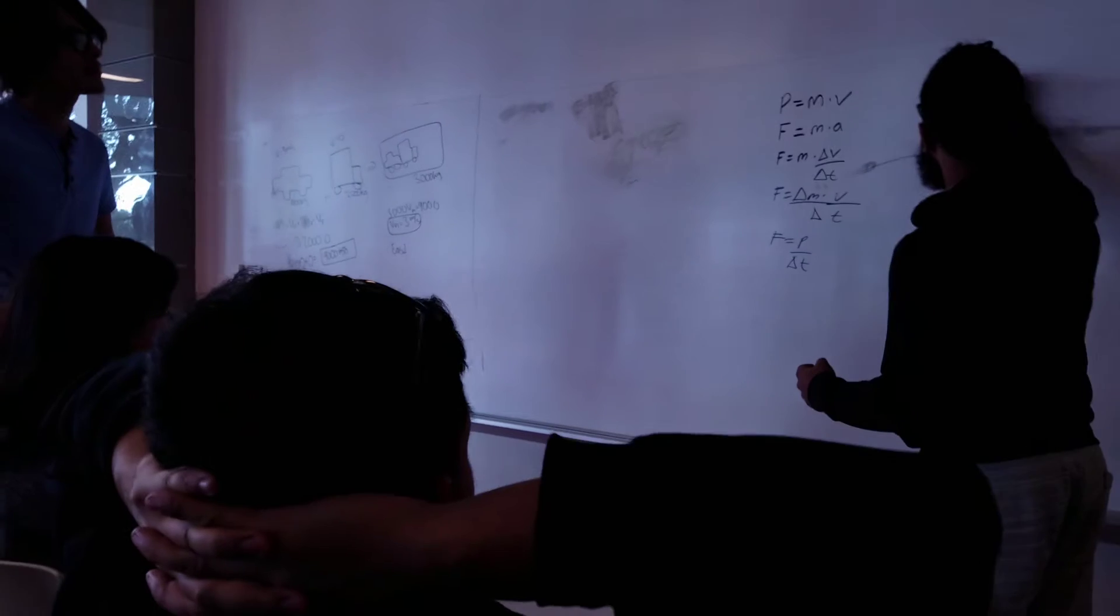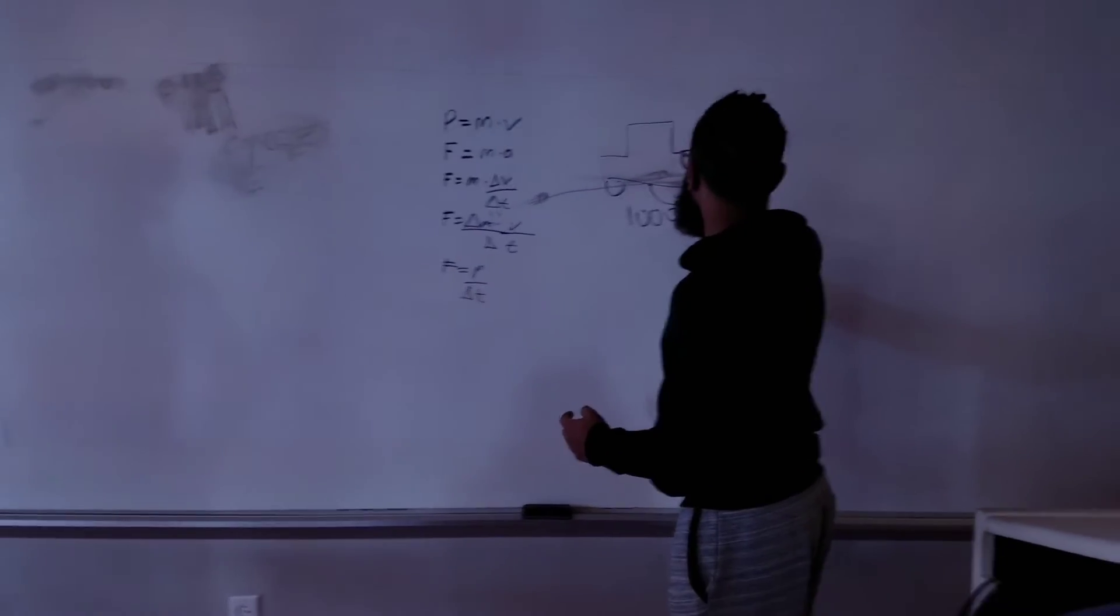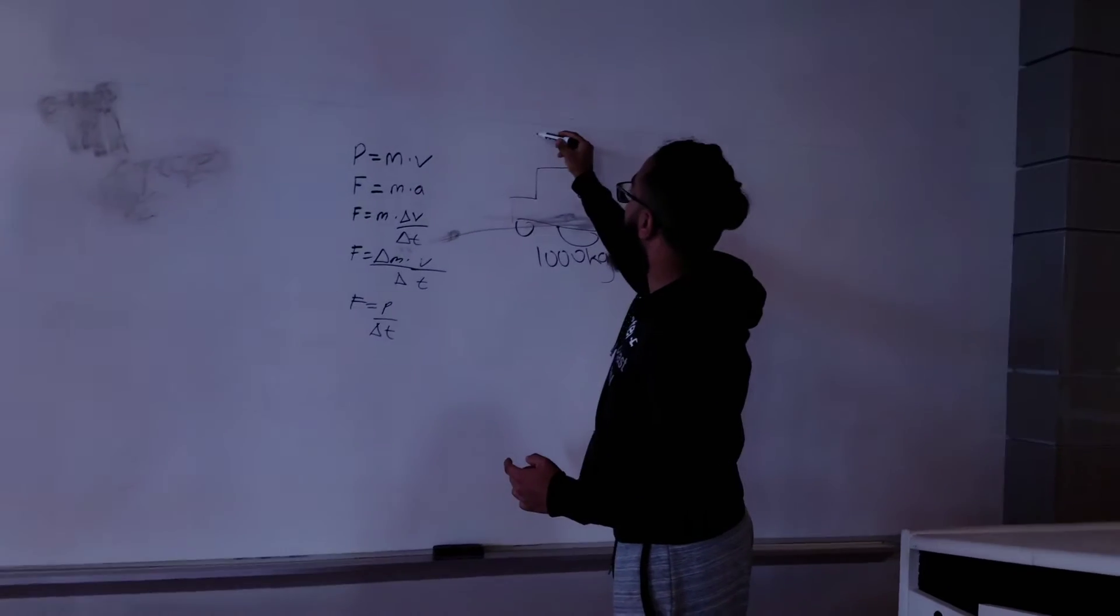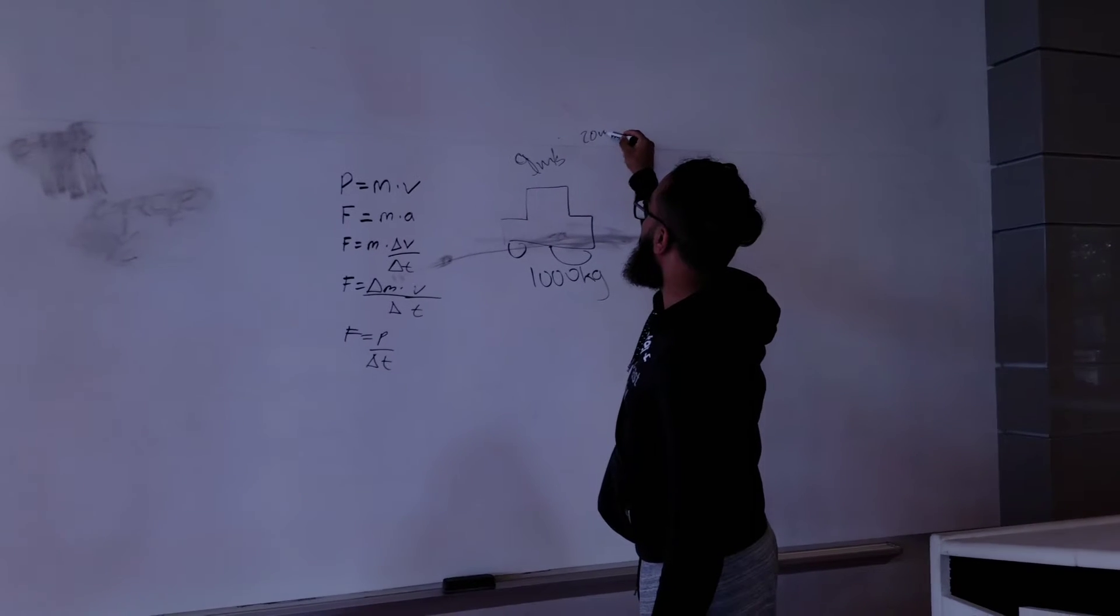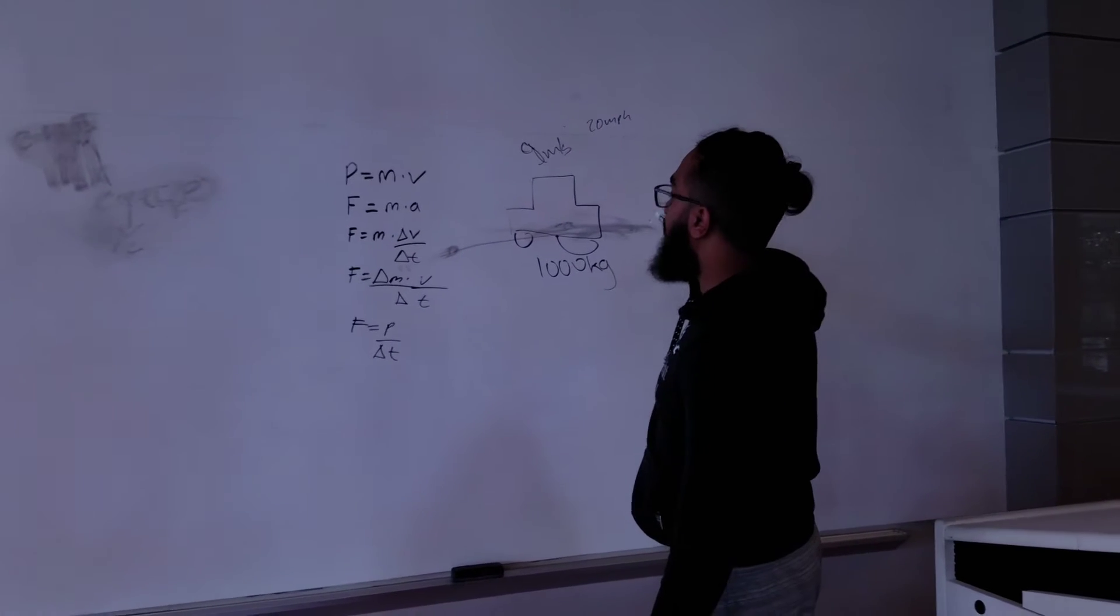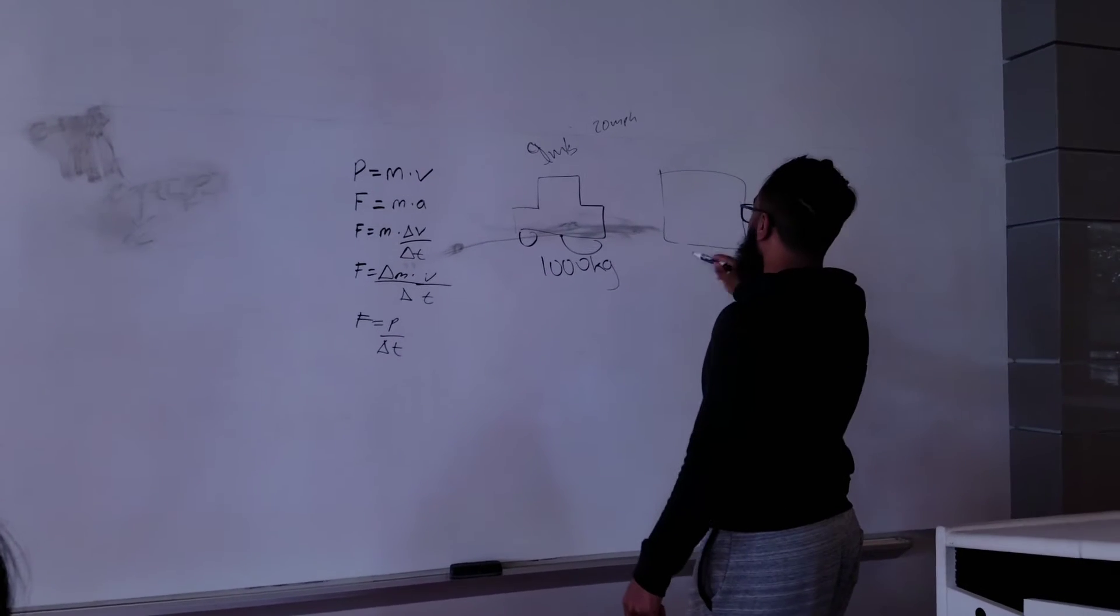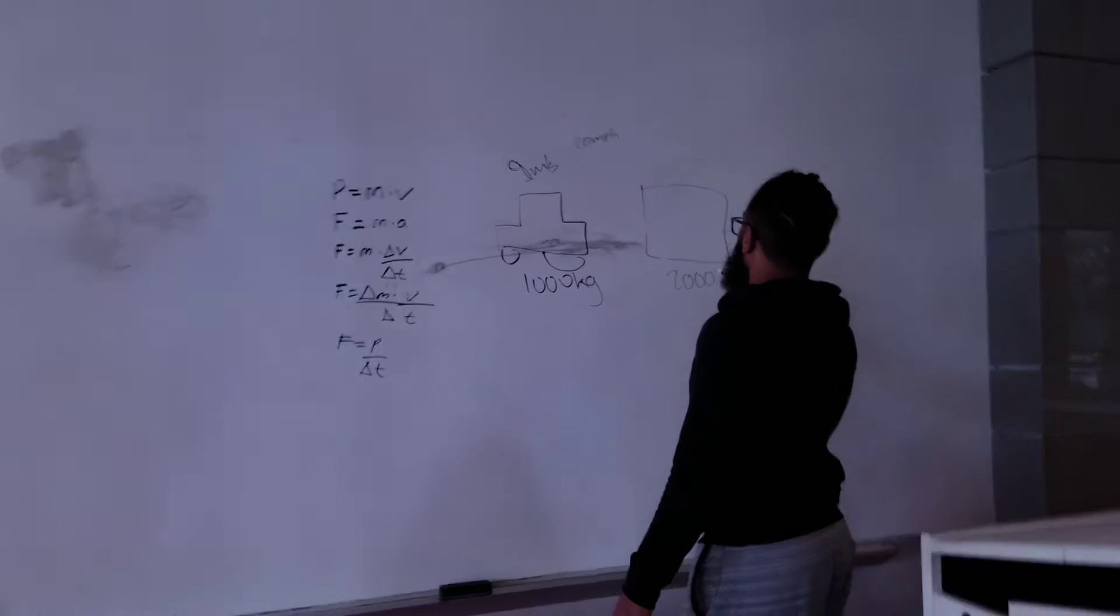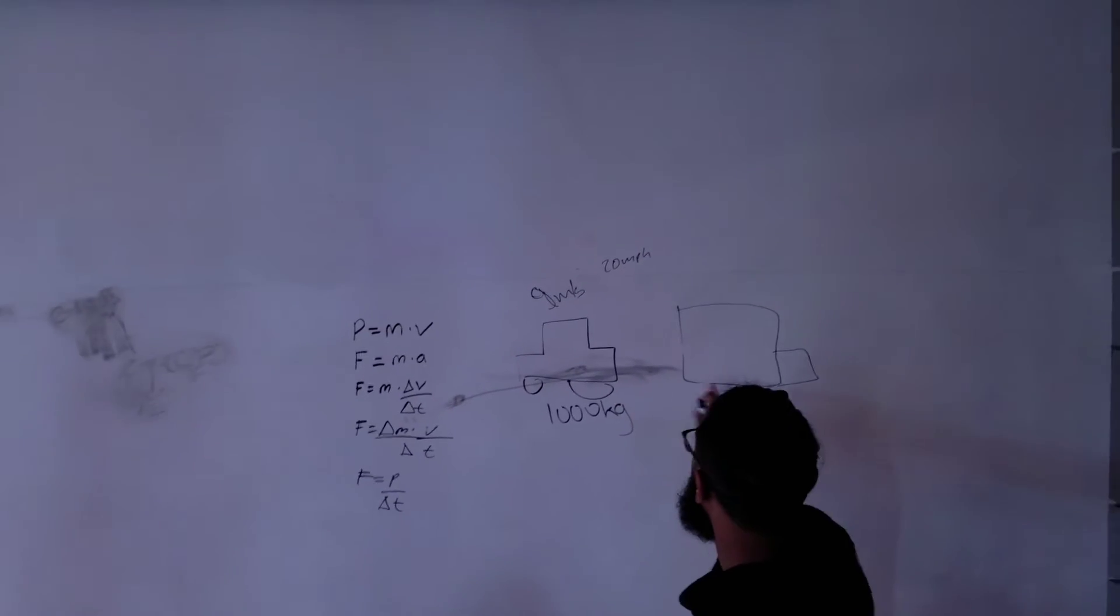Now we're going to do the example for that equation. Our example is that there is a car that weighs 1,000 kilograms, and its velocity is 9 meters per second, which is like 20 miles per hour. It's going into a truck that's stationary that weighs 2,000 kilograms. And what we're looking for is the final force that it hits the truck with.